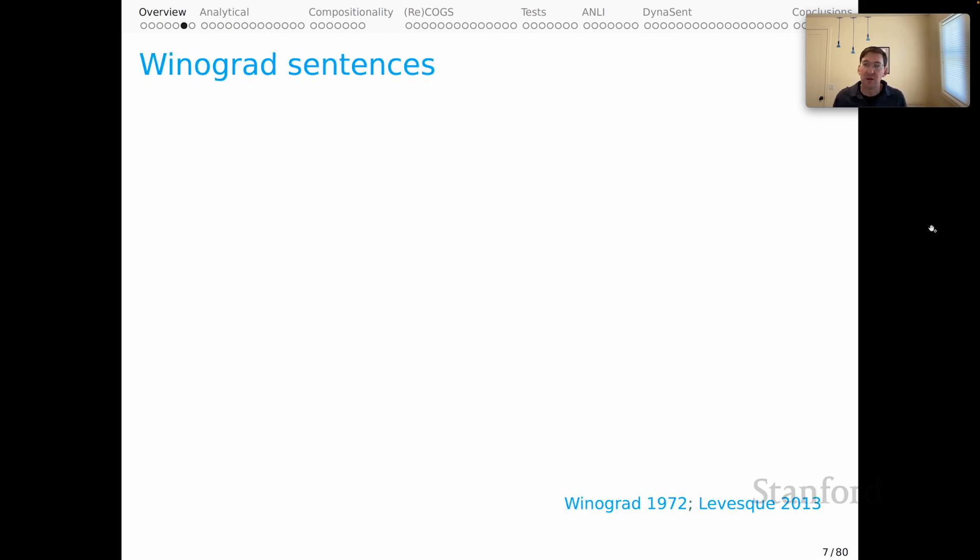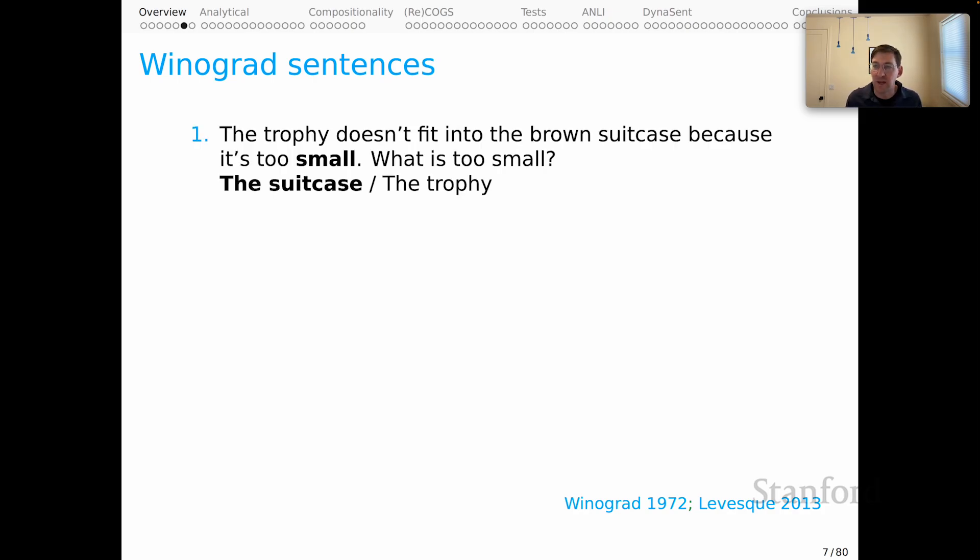The Winograd sentences are really interesting to reflect on now. They are kind of simple problems that can be quite revealing about physical reality and social reality and all the rest. Here's a typical Winograd case. The trophy doesn't fit into this brown suitcase because it's too small. What is too small? The human intuition is to say the suitcase and that's probably because you can do some kind of mental simulation of these two objects and then arrive at an answer to the question.